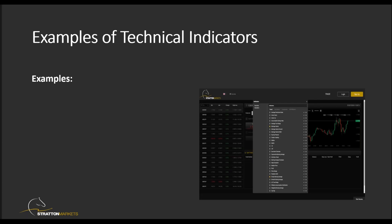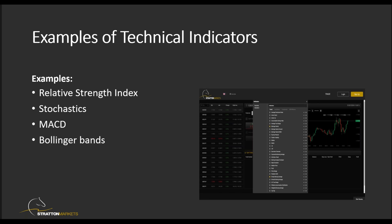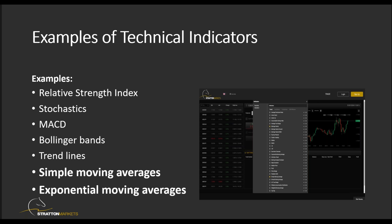There are hundreds of different technical indicators out there. Here are a few examples: the Relative Strength Index (RSI), which is an oscillator; Stochastics; MACD, which stands for Moving Average Convergence Divergence, also an oscillator; Bollinger Bands; trend lines; simple moving averages, which is what we're talking about today; and exponential moving averages, which I will also cover today.